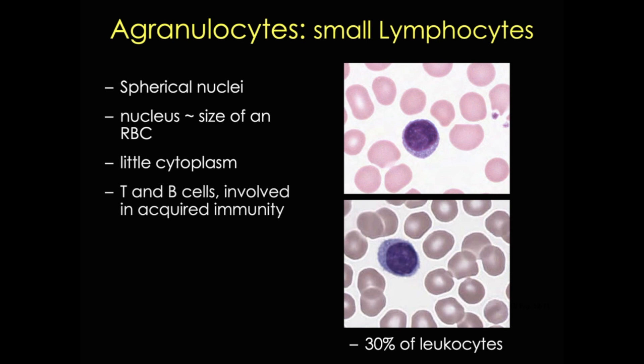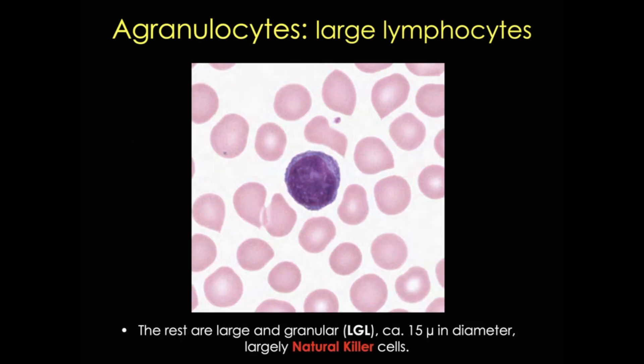Lymphocytes do have a wide size range. Most are quite small, but some are larger with even less visible cytoplasm and may contain a few granules. We call these natural killer cells, and they are a component of the innate immune system. Natural killer cells play a major role in host rejection of tumors and in killing virally infected cells.